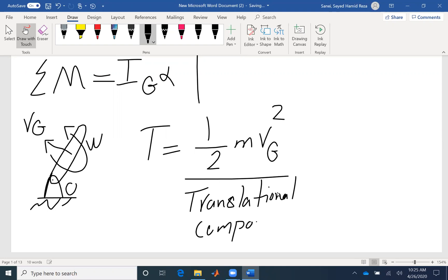In addition to the translational component, we have a rotational component of IG omega squared. So this component is new. We did not have this component in kinetic energy of a particle because for a particle, size is negligible, so moment of inertia is not defined.